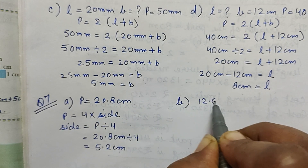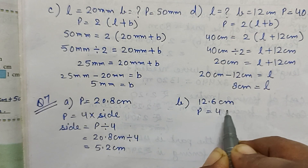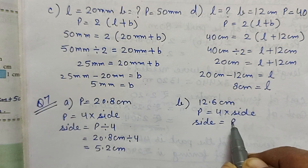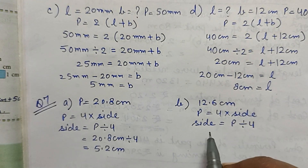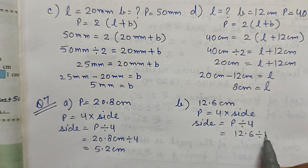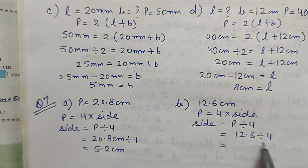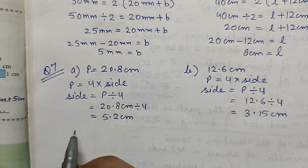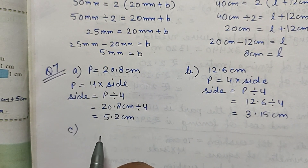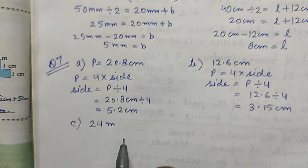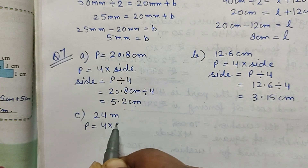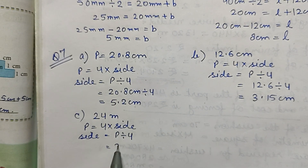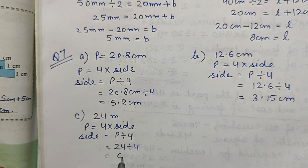Part B: perimeter is 12.6 cm. Side equals perimeter divided by 4, equals 12.6 divided by 4. 4 threes are 12, remainder 15, giving 3.15 cm. Part C: perimeter is 24 meters. Side equals perimeter divided by 4, equals 24 divided by 4, which is 6 meters.